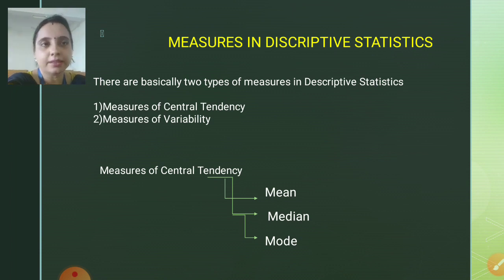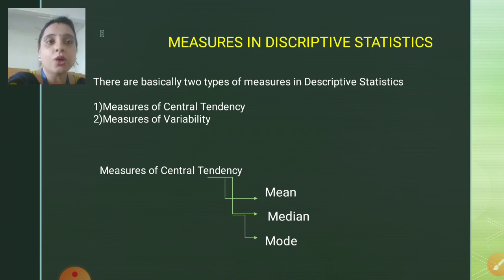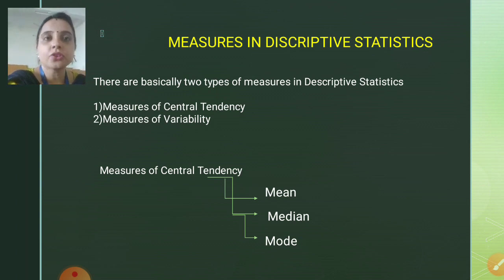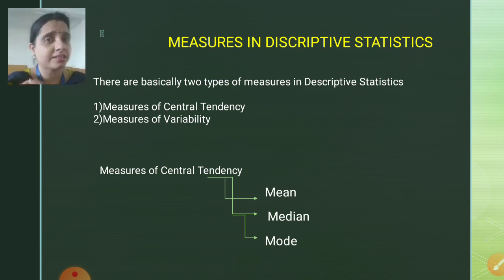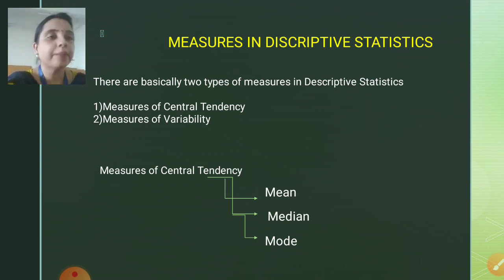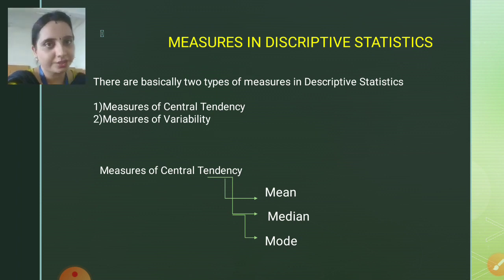Moving ahead to our next topic, that is measures in descriptive statistics — a very important topic. If we talk about measures in descriptive statistics, they are broadly classified as two: measures of central tendency and measures of variability. We will start with the first one, that is measures of central tendency. Measures of central tendency are classified as mean, median, and mode.